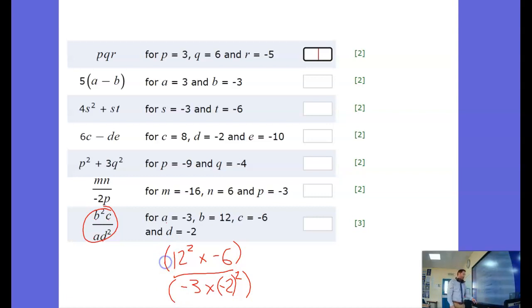So on the top there I've got 144 times minus 6, I think this is calculator time, times negative 6. And then on the bottom we've got minus 3 times minus 2 squared. Well minus 2 squared is 4 positive 4.